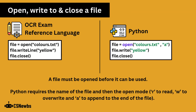A file must be opened before it can be used. Python requires the name of the file and then the open mode: R to read, W to overwrite, and A to append to the end of the file.